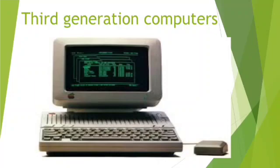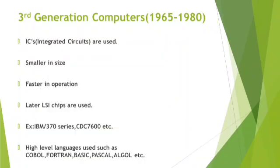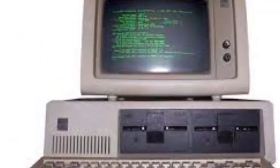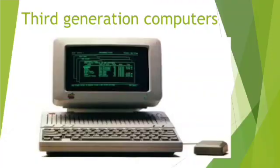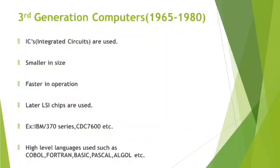The third generation computers were introduced in 1964 by IBM, which stands for International Business Machines. These computers used integrated circuits, that is ICs. They were smaller in size and faster in operation than second generation computers. Later, these computers used semiconductor memories for LSI chips, and magnetic disk drum tracks were used as semiconductor memories. Examples of third generation computers include CDC — Control Data Corporation — 7600, and Digital Equipment Corporation PDP-11.